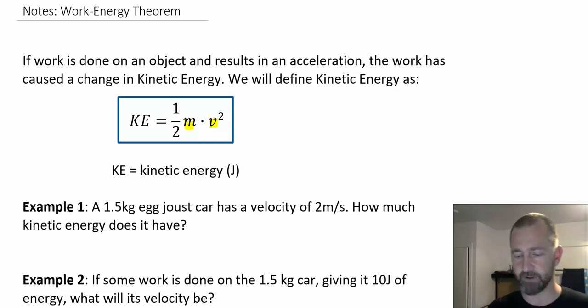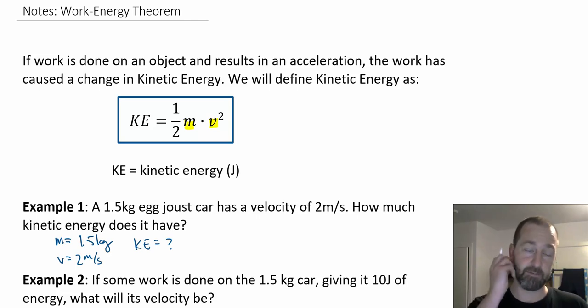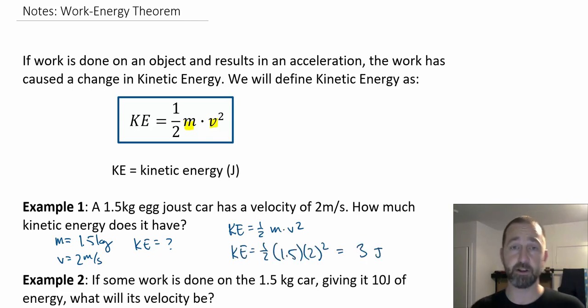If I've got a 1.5 kilogram egg joust car for our project with a velocity of 2 meters per second, I want to know how much kinetic energy it has. Like any classic physics problem, we want to solve it by identifying all the variables locked inside the text. Once we have the identified variables that are given and the unknowns, we can use the equation to substitute and solve.